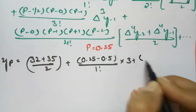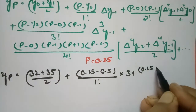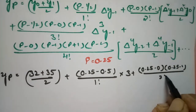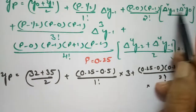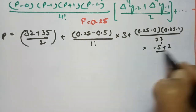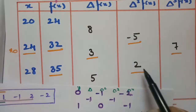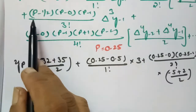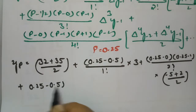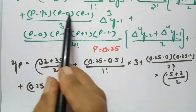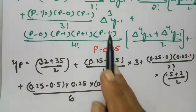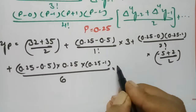Next term: p(p minus 1) divided by 2 factorial, times the second difference. The second differences are minus 5 and 2, so we take (minus 5 + 2)/2. Then the third-difference term: (0.25 minus 0.5)(0.25)(0.25 minus 1) divided by 6, times Δ³ which equals 7.